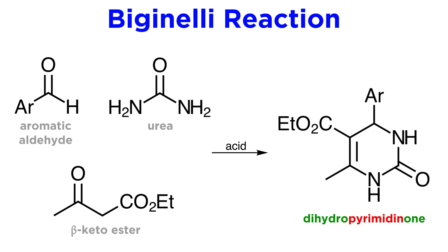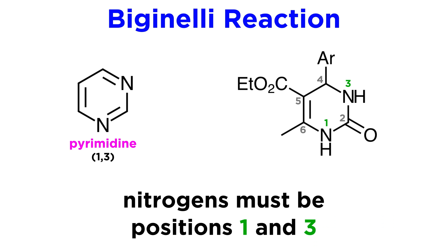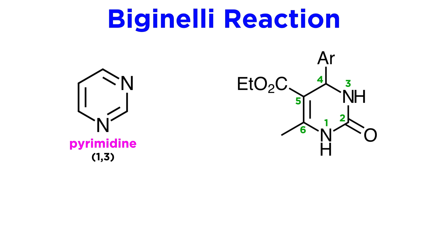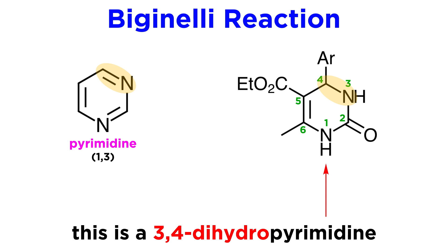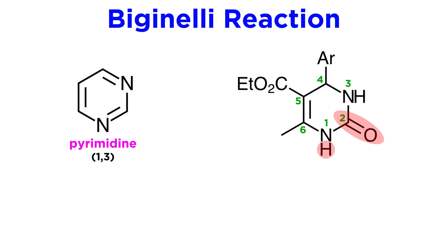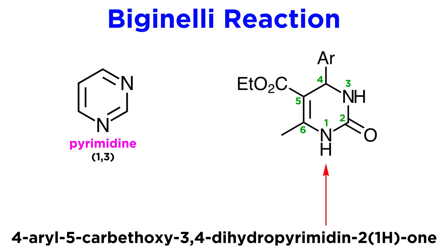It is therefore quite interesting that the Biginelli reaction constitutes a rapid entry into these systems. However, the product is not a fully aromatic pyrimidine, but rather a more complex one. When numbering pyrimidines, the nitrogens must be positions 1 and 3. Looking at our Biginelli product, the double bond between N3 and C4 is missing, so we call this a 3,4-dihydropyrimidine, meaning we have added two hydrogen atoms to positions 3 and 4 — the one visible on the nitrogen and the implied hydrogen on the carbon. There is also a carbonyl at C2, which adds a hydrogen atom at N1. We finish with an aryl group at C4 and an ethyl ester group at C5. Therefore, the complete name is 4-aryl-5-carbethoxy-3,4-dihydropyrimidine-2(1H)-one.